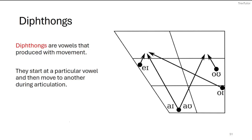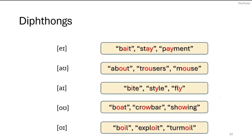Now we have five more vowels to discuss: diphthongs. These are vowels with movement — they start at a particular location and then move slightly as they're being pronounced. The vowel sounds are /eɪ/, /aɪ/, /aʊ/, /oʊ/, and /ɔɪ/. With /aɪ/, /aʊ/, and /ɔɪ/ you can feel your tongue move. With /eɪ/ and /oʊ/ the movement is harder to feel, but they are still diphthongs.